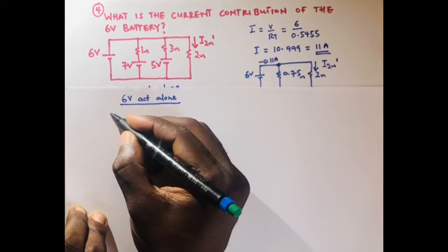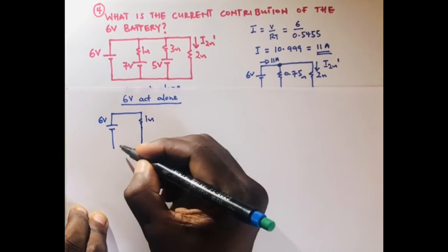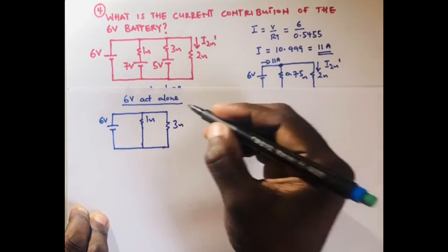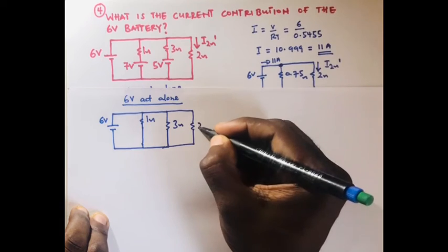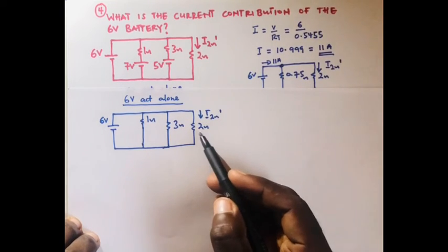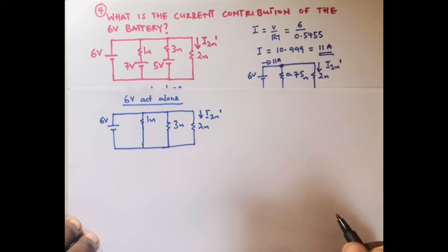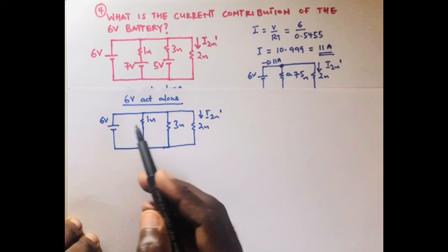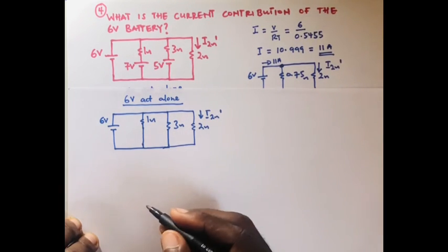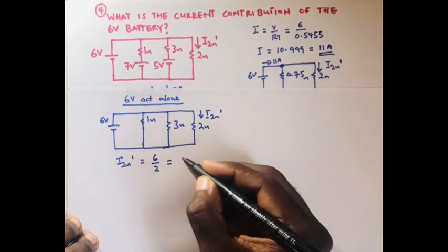Redrawing the circuit: we have the six volts, the one ohm resistor, the short circuit, the three ohm resistor, and the two ohm resistor. We want to find the current through the two ohm resistor, and we realize these three resistors are connected in parallel. For a parallel connection, the same source voltage is applied across each resistor, so the current through the two ohm resistor is simply I₂Ω prime equals six over two, which equals 3 amperes.